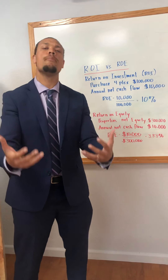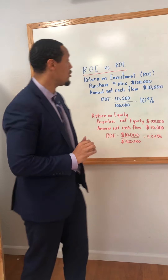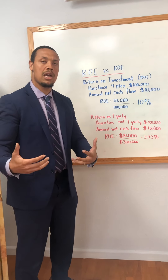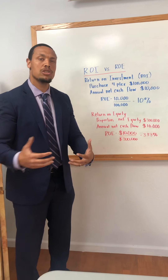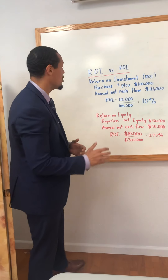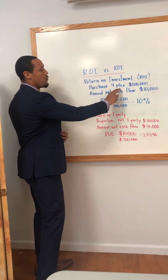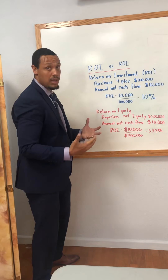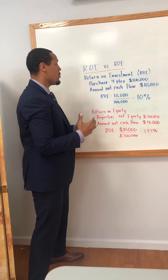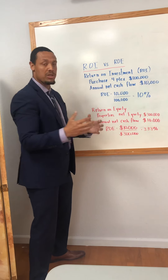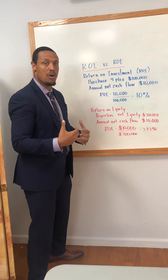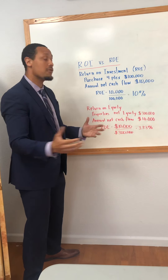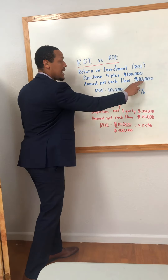So let's just go through some math real quick. First of all, return on investment. Let's look at a particular example as if you were to go out and purchase a fourplex. Let's just say you purchased the fourplex with $100,000 down. Now, that annual cash flow — which is the net cash flow after your net operating income comes in and pays your mortgage — your net cash flow is $10,000.